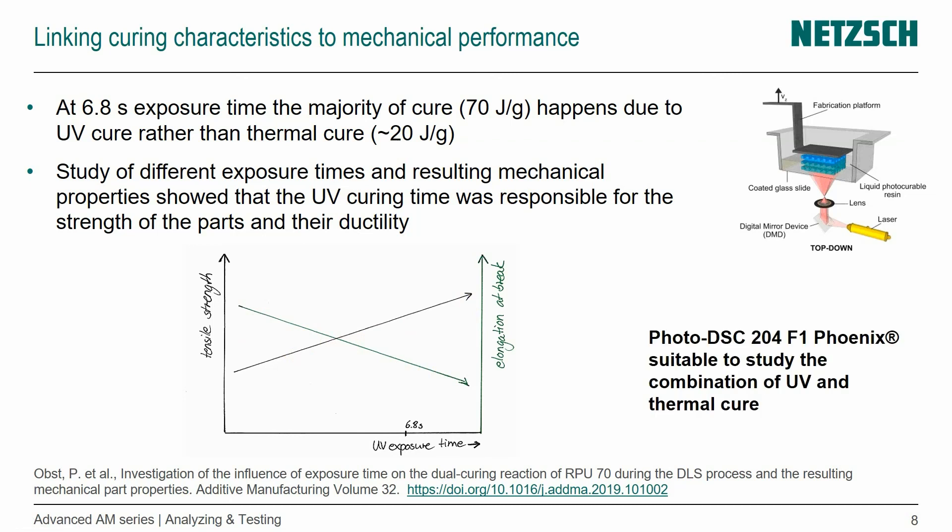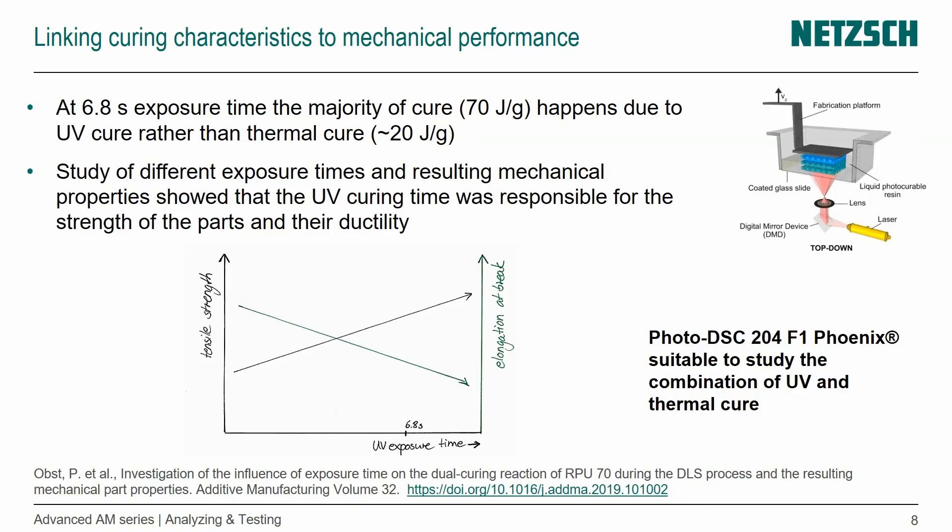So this is really a cool way to study a complex chemical reaction and a complex resin system, because it's UV curable and thermally curable — it actually needs both to fulfill its full property potential. A photo DSC like the Phoenix 208F1 is suitable to study this combination of UV cure and thermal cure. It's a pretty neat tool to use to evaluate your materials, develop your processes, and be a lot faster than trial and error by mixing materials together and trying them in the 3D printer.